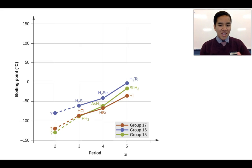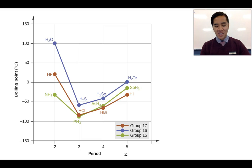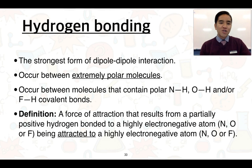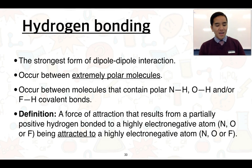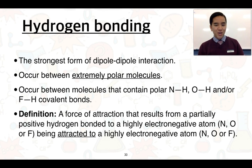However, when we plot the boiling points of the period two compounds — water, HF, and NH₃ — we can see they are quite significantly high. This is due to hydrogen bonding between their molecules. Hydrogen bonding is the strongest type of dipole-dipole interaction and occurs between very polar molecules, specifically when hydrogen bonds to a very electronegative atom such as nitrogen, oxygen, or fluorine.